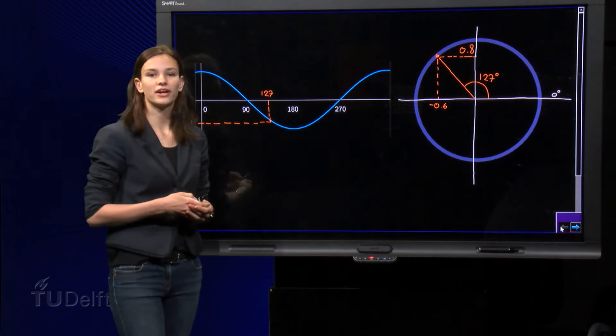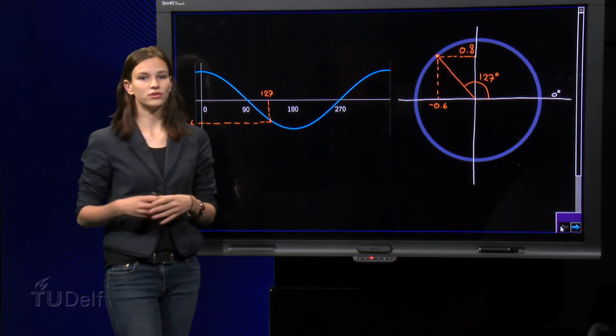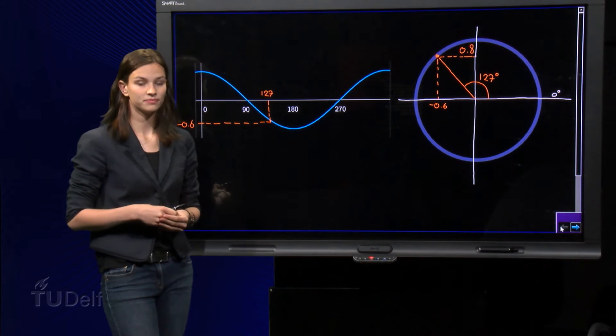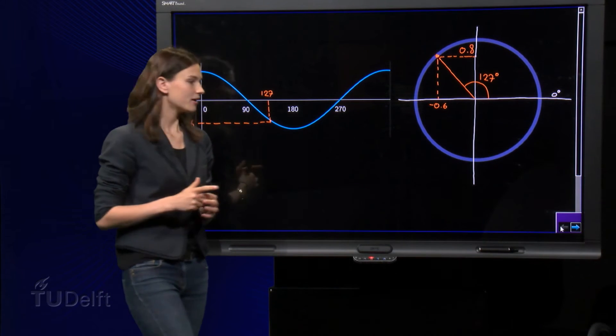Indeed, any cosine for an angle between 90 and 270 degrees is negative. This shows that my answer is wrong, but not where I made the mistake.